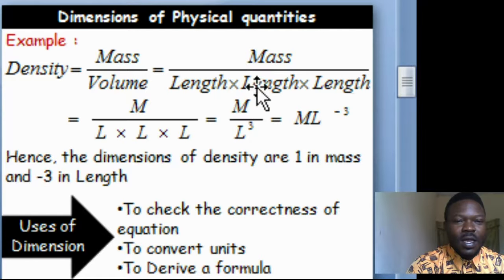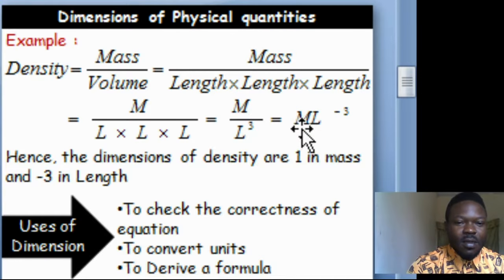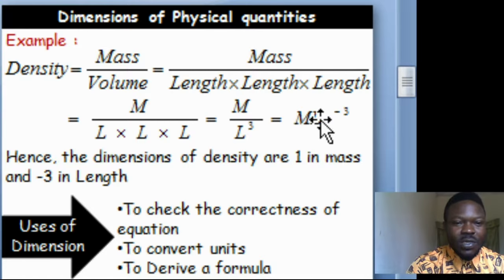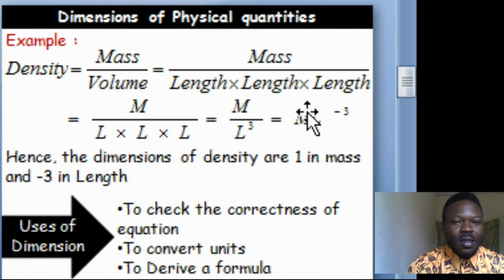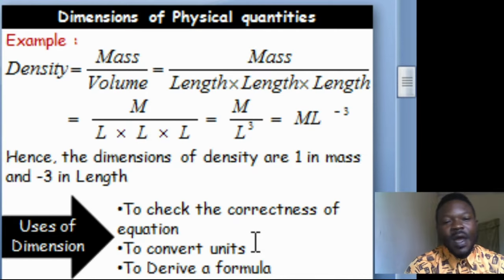Volume is derived. We convert it to length times length times length — that is length cubed. So density is mass over L cubed, which means the dimension of density is M times L to the minus 3. The power of mass is 1 and the power of L is minus 3. The uses of dimensions are: to check correctness of an equation, to convert units, and to derive a formula.